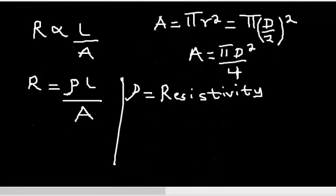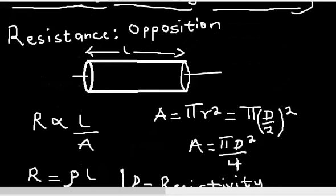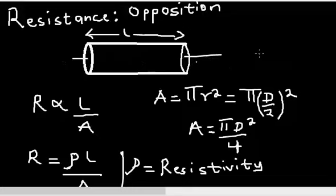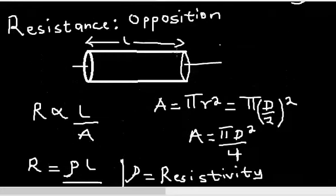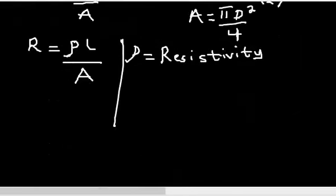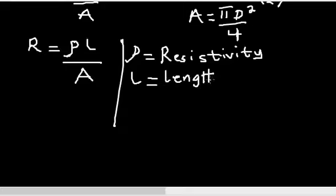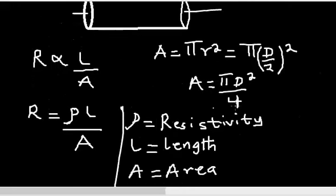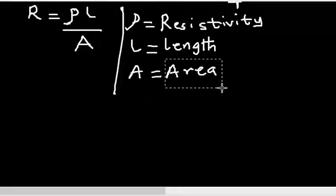Based on electrical conductivity or resistivity, a material can be said to be a conductor, an insulator, or a semiconductor. Conductors are materials that have a very low resistance, meaning they allow the free flow of current. Insulators have a very high resistance and almost completely oppose the flow of electrical current. The formula is: R = ρL/A, where ρ is resistivity, L is the length of the material, and A is the cross-sectional area.